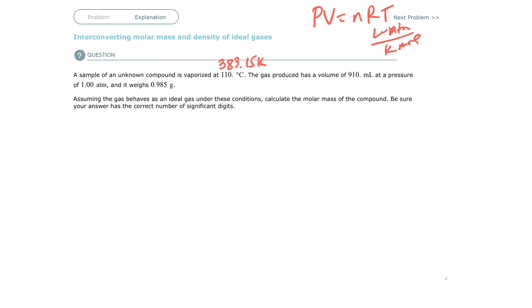So 910 milliliters is going to be 0.910 liters. We have atmospheres and we have a weight here we'll talk about in a second. So that means our R, since we have atmospheres, is going to equal 0.0820574 liter atmospheres over Kelvin moles.